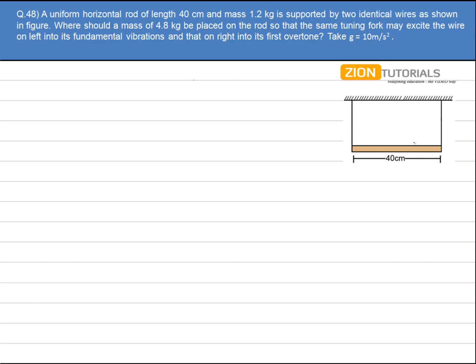Now let's say mass is placed somewhere over here. So let us suppose this distance be x, so this distance will be 0.4 minus x, and mass is placed over here.